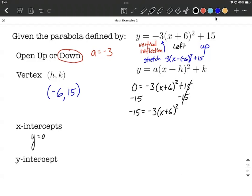So 0 minus 15 makes negative 15 equals negative 3 times the quantity x plus 6 squared. Next I want to get rid of the negative 3. Remember, I want to isolate that quantity raised to the second power. So we're going to divide both sides by negative 3. That will put us with 5 equals x plus 6 quantity raised to the second power.